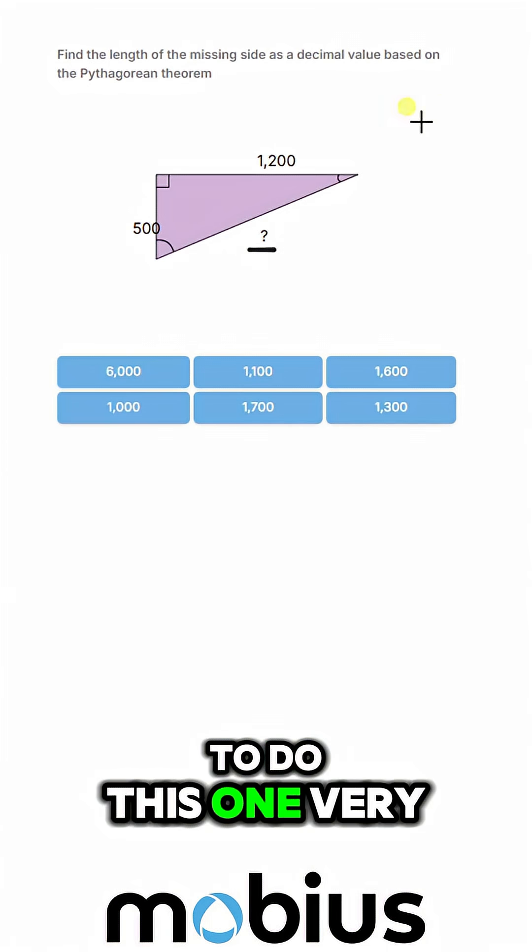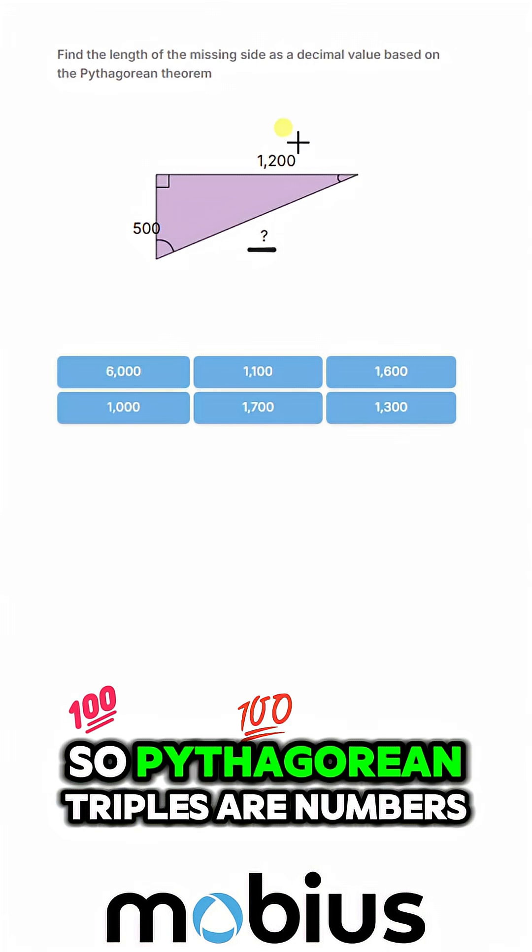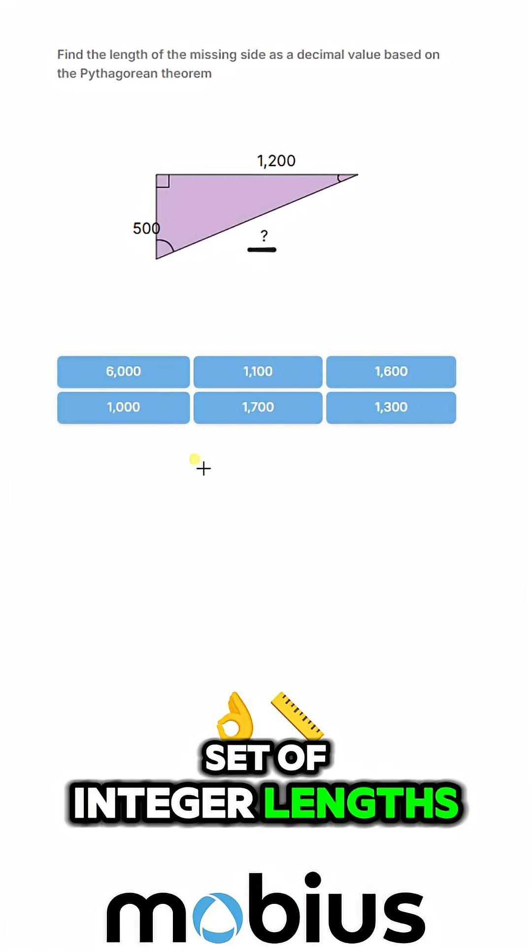We should be able to do this one very quickly using Pythagorean triples. Pythagorean triples are numbers that make a perfect set of integer lengths.